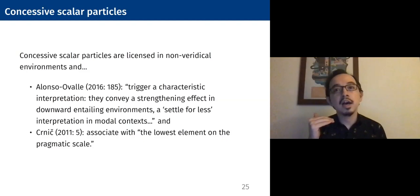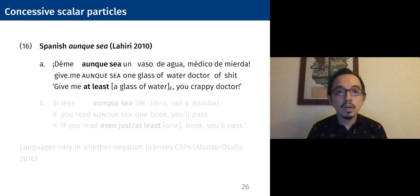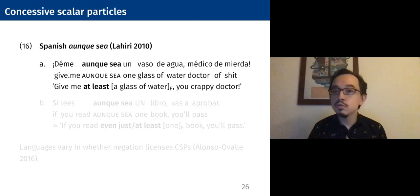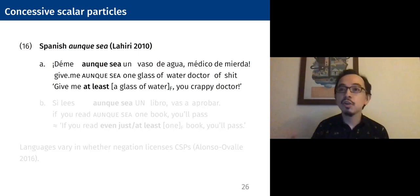Here are a couple examples from Spanish. This item, aunque sea, is claimed to be a concessive scalar. So 'give me at least a glass of water, you shitty doctor' — aunque sea is associated with something low on the scale. There are other things a doctor could give you, but you're asking for very little, settling for less. We can also have it in a conditional clause: 'if you read aunque sea one book, you'll pass.' It's noted that if it's not the lowest point — say, five books — then this is ungrammatical.